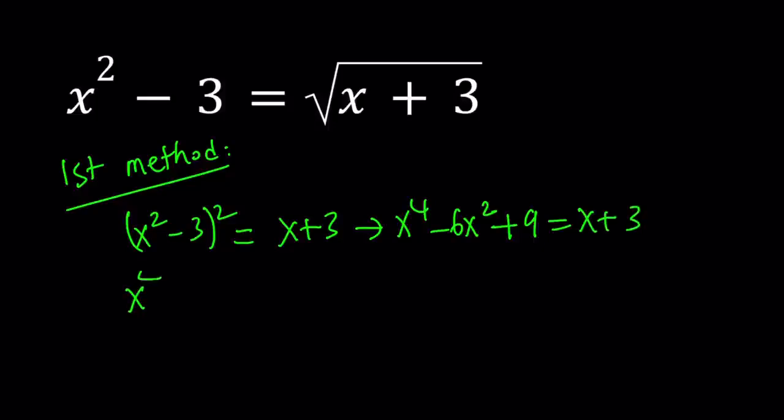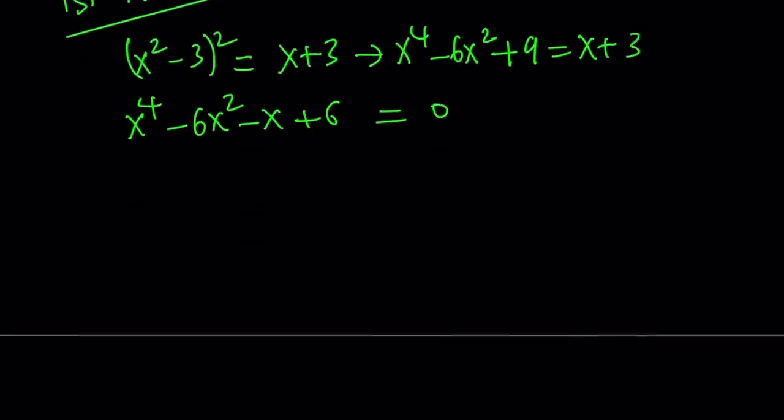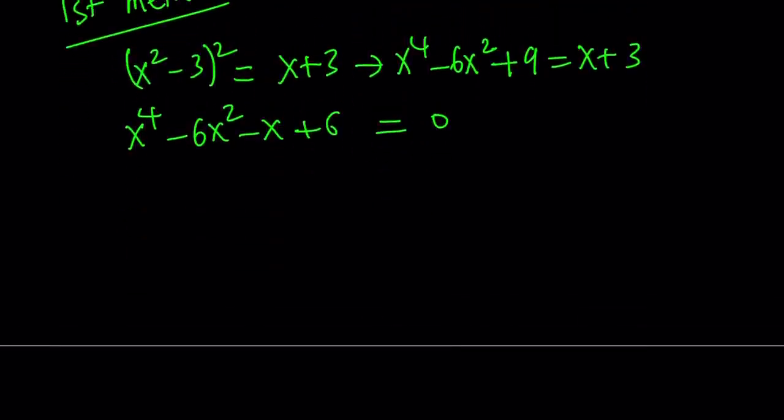Plus 9 equals x plus 3. Let's put everything on the same side. 9 minus 3 is equal to 6. This kind of looks factorable, doesn't it? Let's try to factor it by grouping. Take x squared out, x squared minus 6. And then take a negative one out, you get x minus 6. Uh-oh, it's not factorable. Too bad.